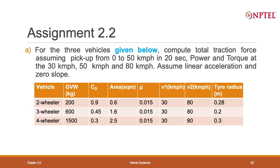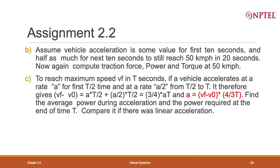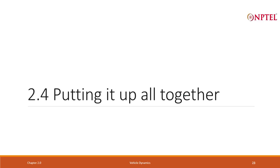Assume linear acceleration and 0 slope. Another problem: assume vehicle acceleration is some value in the first 10 seconds and half as much over the next 10 seconds to still reach 50 km/h in 20 seconds. Again compute traction force, power, and torque. Note that problem C is what you need to do before B, because it will give you the kind of expression required to compute that.